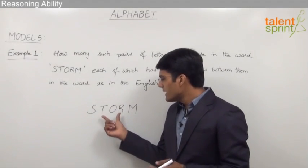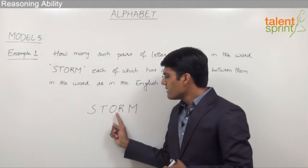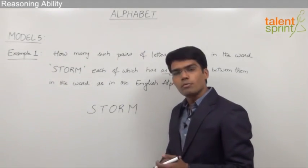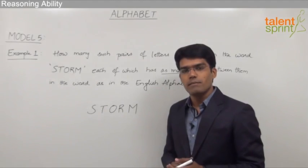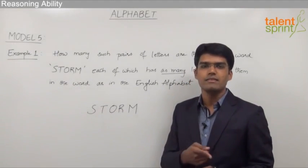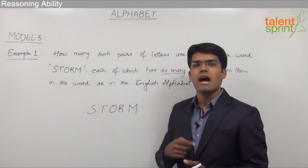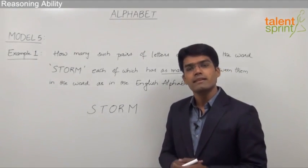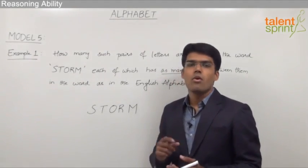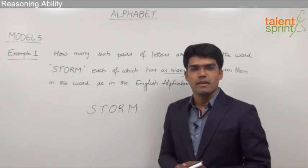Similarly, if you look at the letters T and R, there is one letter between R and T in the word, and that letter is O. As per the English alphabet, reading from R we have R, S, T — so between R and T we have only one letter, S. And in the given word we also have only one letter O between them. So R and T can also be taken as a correct pair.